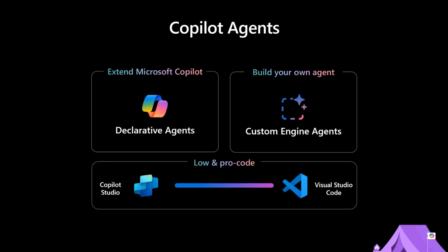There's low code and pro code for both types of agents. If you like working in a visual canvas for use inside your tenant, you probably want Copilot Studio. If you like writing code — maybe even just JSON — and you like using Visual Studio or Visual Studio Code, want to work with a team of people, use source control, deploy into a dev tenant and then separate tenants, with multiple feature teams working in parallel, then you would choose Teams Toolkit and Visual Studio Code. That's what we're really going to talk about today.